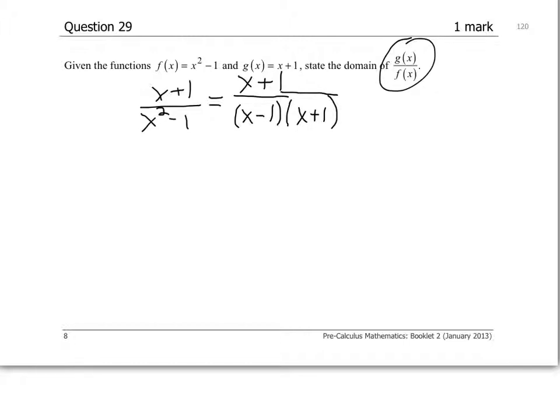So if we look at the denominator here, we want to solve the denominator. So basically, the NPVs, or the non-permissible values, are x equals 1, x equals negative 1.